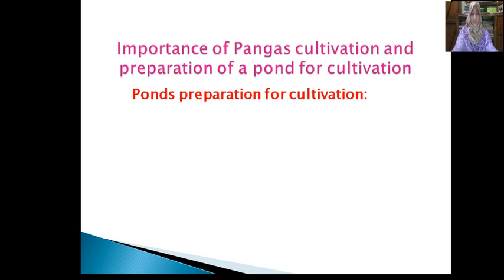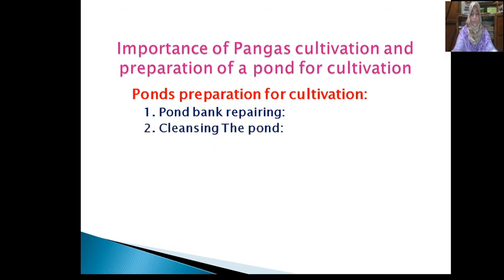Pond Preparation for Cultivation: A pond needs to be prepared before the fry are released. The following steps are to be followed. First, pond bank clearing: the pond bank is to be repaired and a high bank will be made. If there is any bush, we need to clear it up. If there is any big tree, its branches are to be cut off. Second, cleansing the pond: there should be no aquatic weeds in the pond. If there is more clayey soil in the bottom of the pond, it is to be excavated. If possible, the layers of clay are to be dried and the pond bottom is to be made hard.